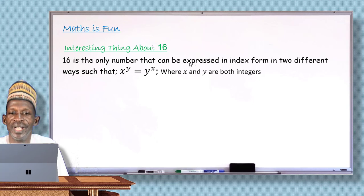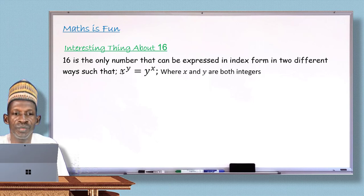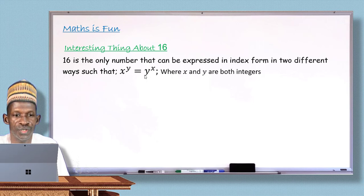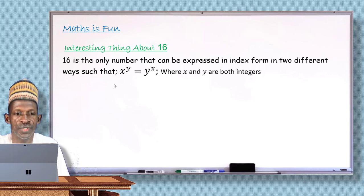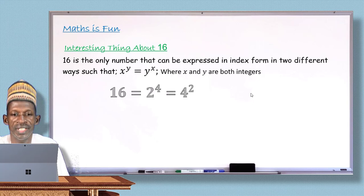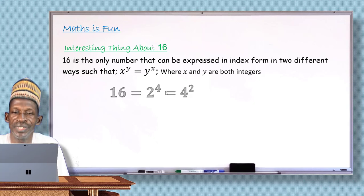16 is the only number that can be expressed in index form in two different ways such that if one is x raised to y, the other is y raised to x, and both x and y are integers. The base of the first index number serves as the power of the second, and the base of the second serves as the power of the first. It is only 16 that this can happen: 16 = 2⁴ and also = 4². The base 2 is the power in the second, and the base 4 is the power in the first. It is only 16 where this occurs.